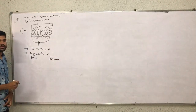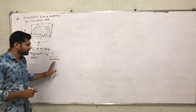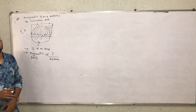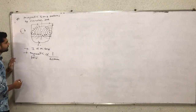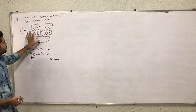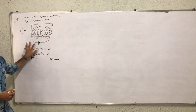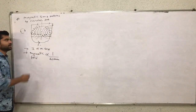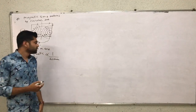Magnetic field decreases when the distance is increased. Also, regarding the number of circular loops: when the number of conducting loops is increased, the magnetic field will also increase.